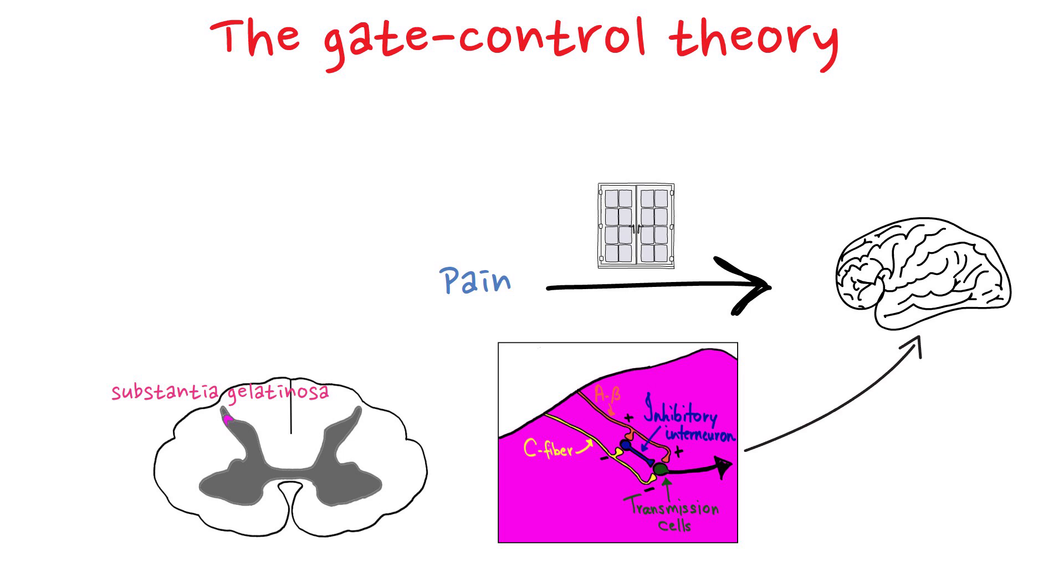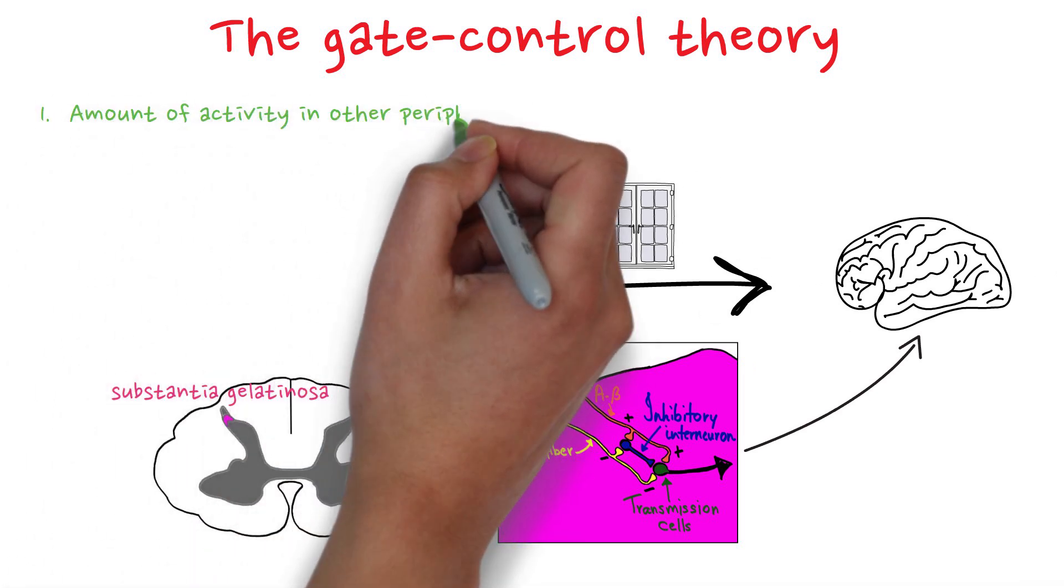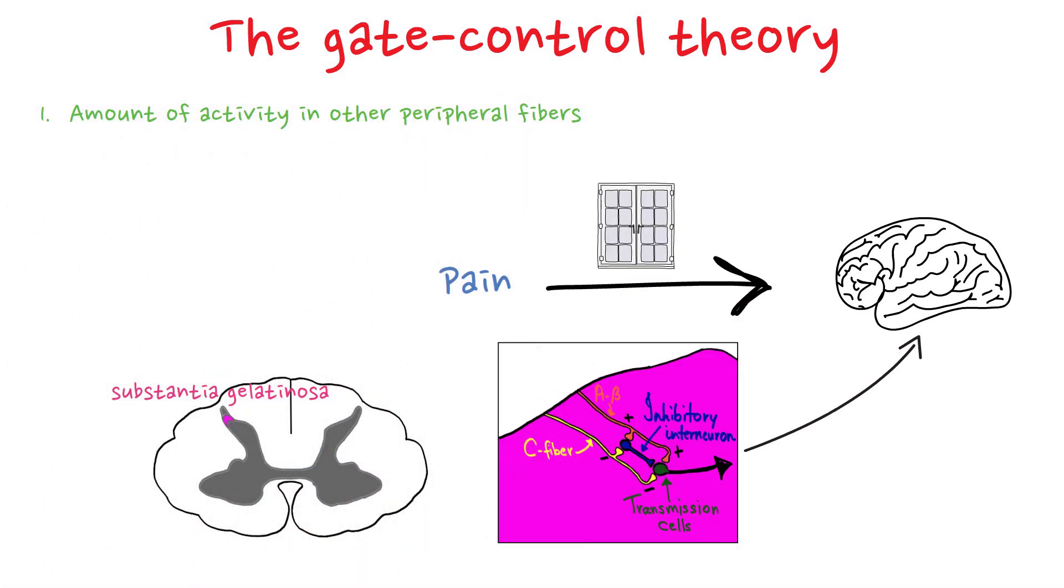The gate control theory proposes that there are three factors involved in the gating mechanism. First, we have the amount of activity in other peripheral fibers. So, for example, here we have A-beta fibers.